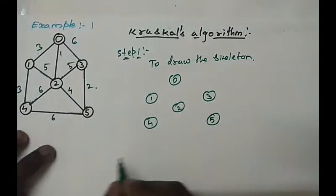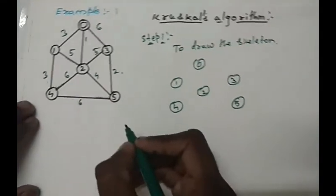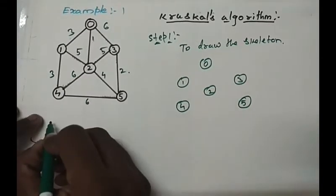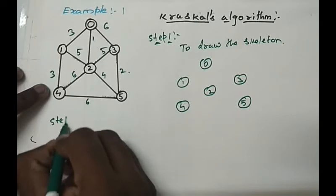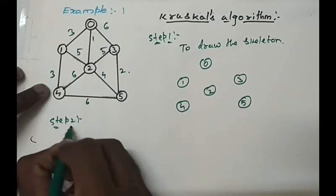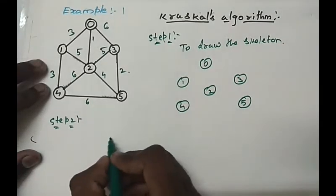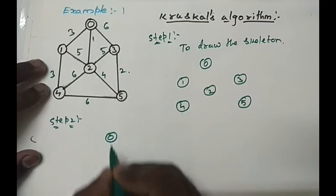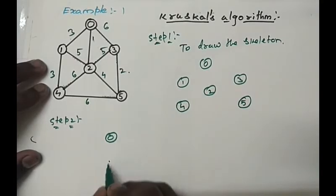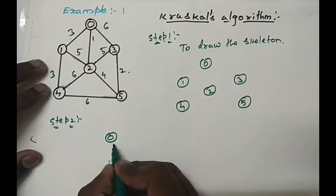In this step, we are drawing it here. Step 2 is 0 to 2 will be the minimum weightage. That is 1.